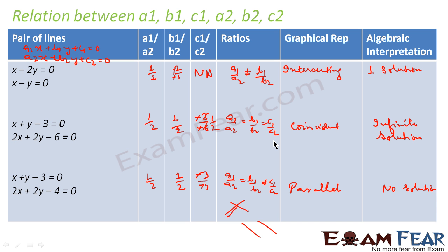Let me repeat once again: if a1/a2 is not equal to b1/b2, both lines are intersecting and you have one solution. If a1/a2 equals b1/b2 equals c1/c2, all are equal — both lines are coincident and have infinite solutions. If a1/a2 equals b1/b2 but not equal to c1/c2, both lines are parallel and there is no solution.